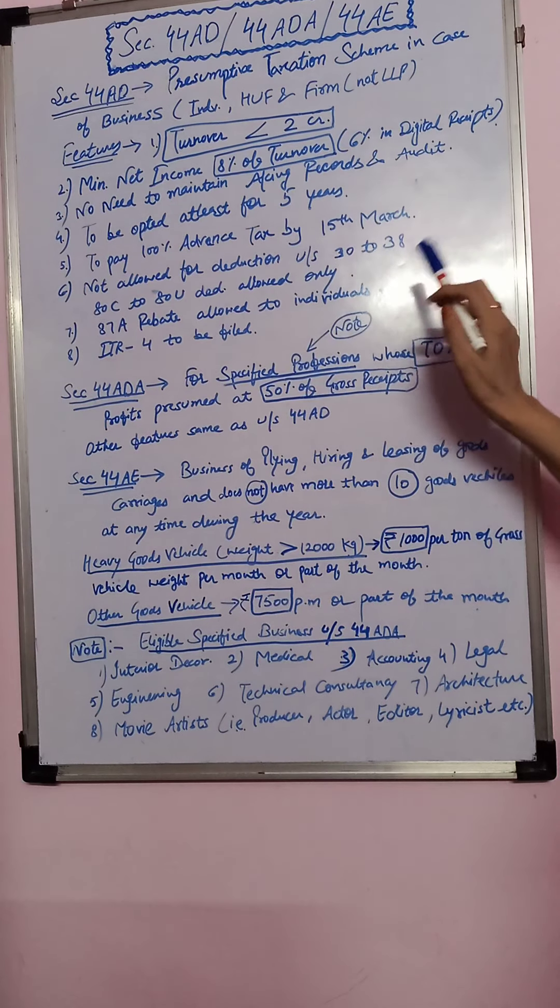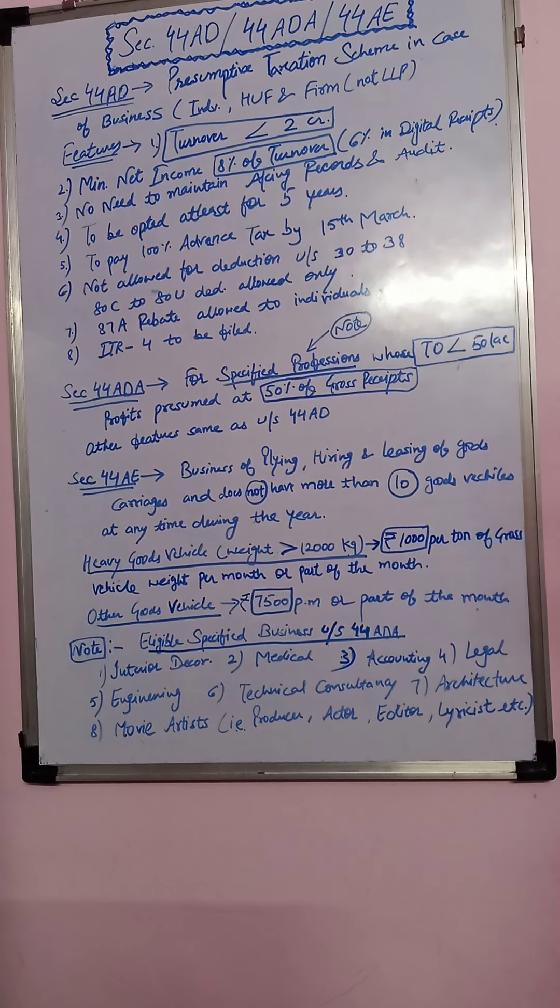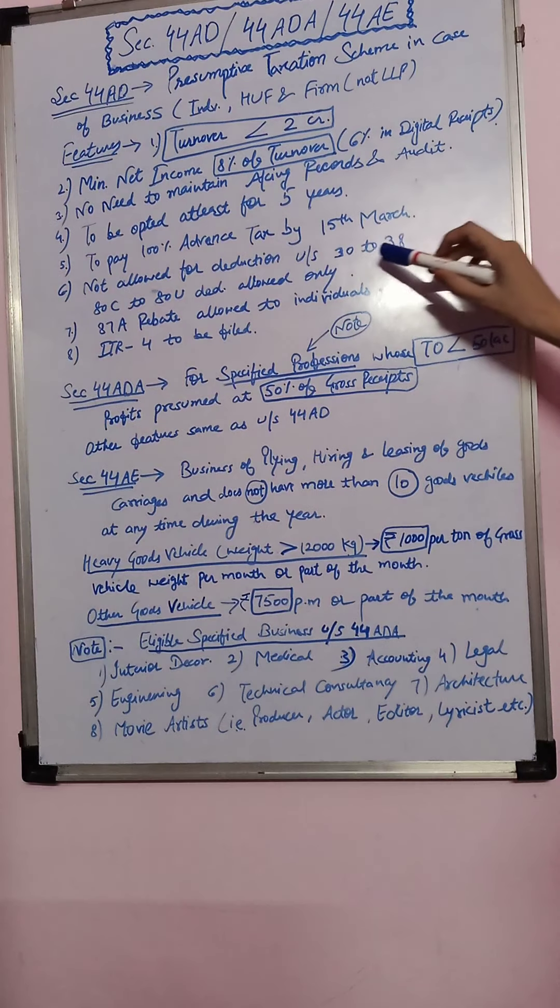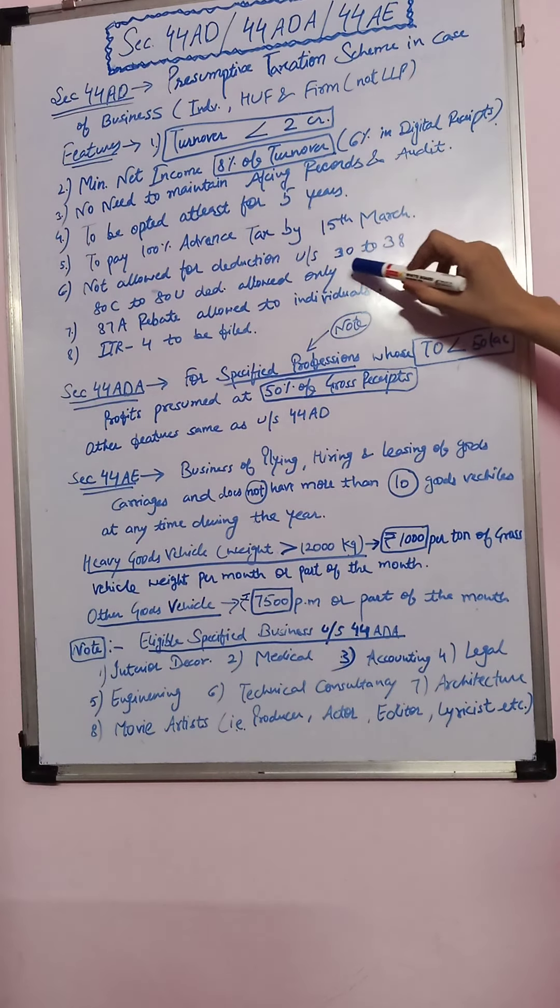Next, not allowed for deduction under Section 30 to 38. 30 to 38 Income Tax Act ke under, these are some sections where we get deductions to a business or a profession. I will tell you something general, but if you want to know in detail, please tell me in the comment section so that I can make a video on this section. Section 30: rent, taxes. Section 31: repair and insurance of plant and machinery, furniture. Section 32: depreciation. Then Section 36: general deductions. If you don't opt for this scheme, then you can avail these deductions.